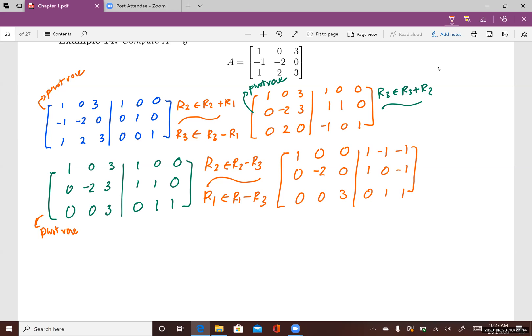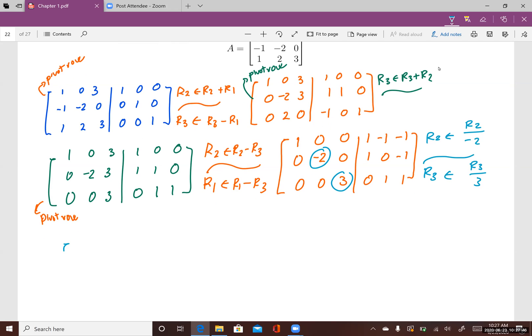At this point, we look at this matrix on the left here. It's almost an identity matrix except these two entries have to be 1. So the next row operation is row 2 goes to row 2 divided by negative 2. Row 3 is row 3 divided by 3. The resulting matrix after these two row operations is row 1 stays the same. Row 2 will be 0, 1, 0, negative 1 half, 0, positive 1 half.